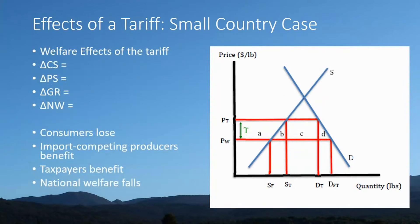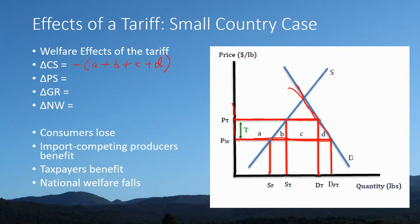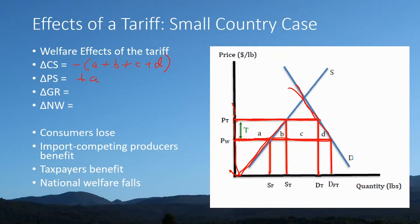What are the welfare effects of the tariff? Consumer surplus originally covered a large area; as a result of the tariff, it is reduced by minus A plus B plus C plus D. Consumers lose because of the higher prices they now pay. Producers benefit — their surplus increases by a positive A. Producers gain increased profitability and jobs are being created.